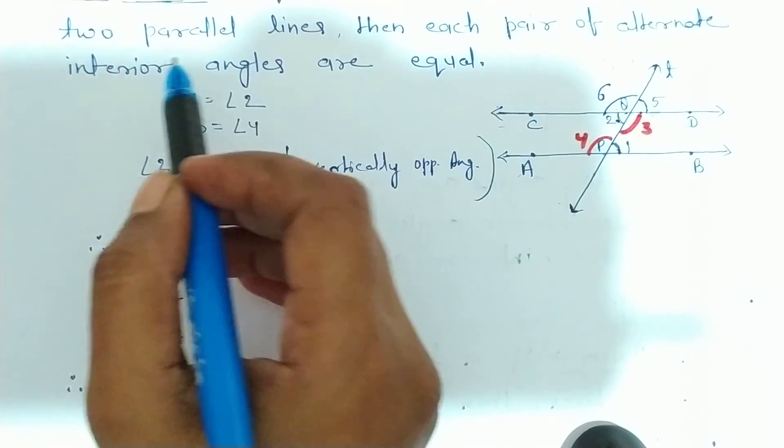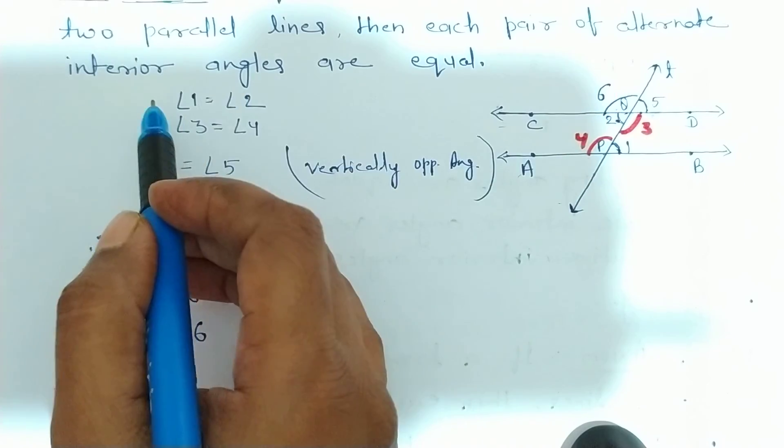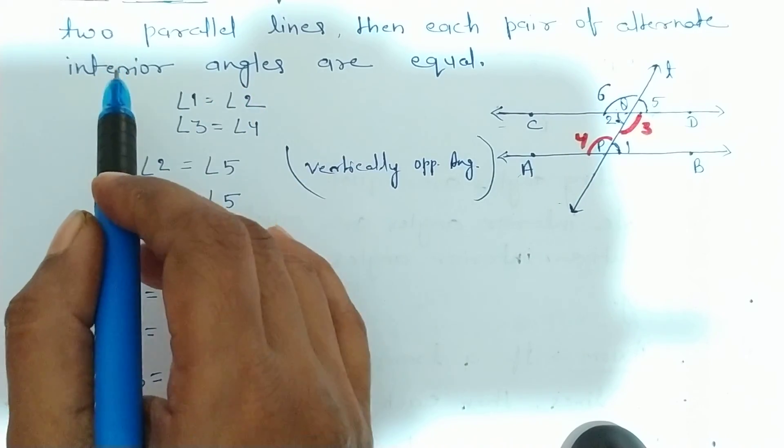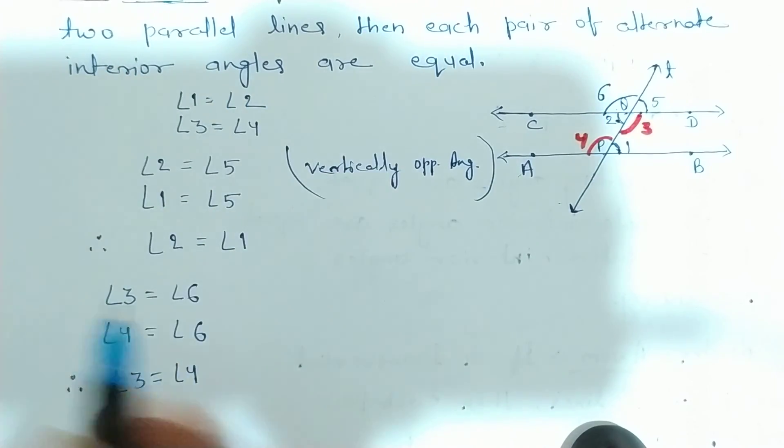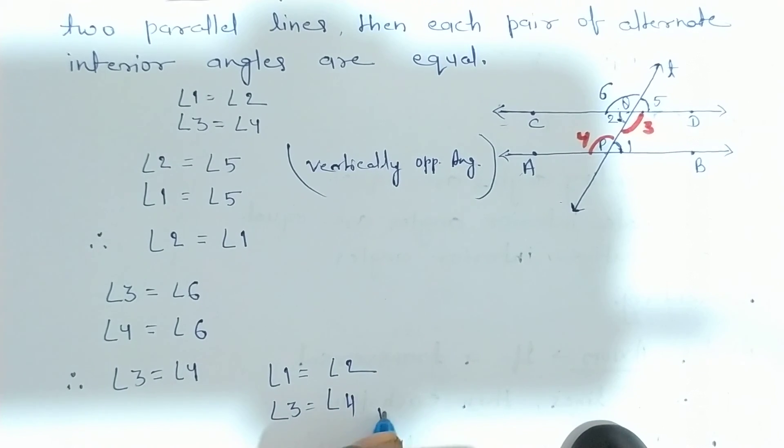Means, if a transversal intersects two parallel lines, then each pair of alternate interior angles are equal. So, now, proved that angle 1 equal to angle 2, angle 3 equal to angle 4. Proved. Clear hai? Thank you.